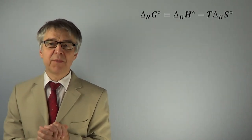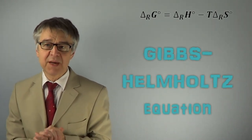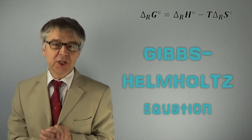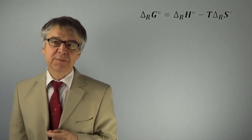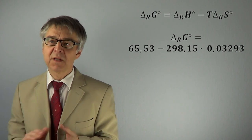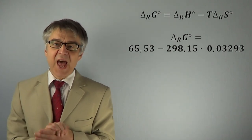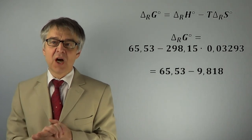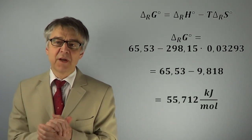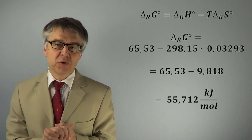The Gibbs free energy of the reaction may be determined by the equation of Gibbs-Helmholtz. Delta G equals delta H minus T times delta S. We use the corresponding values, always in kJ, and get a positive Gibbs free enthalpy change of about 56 kJ per mole.